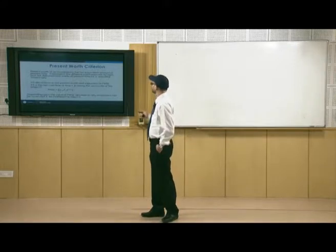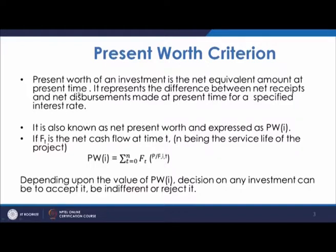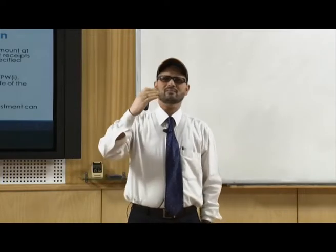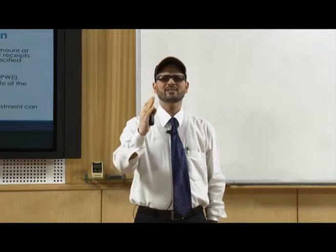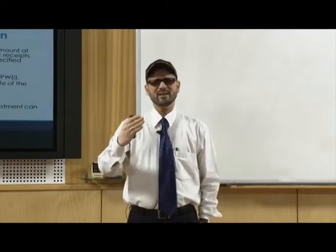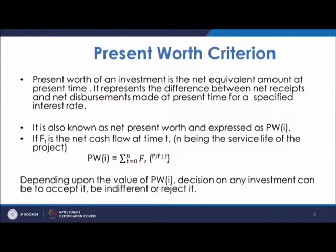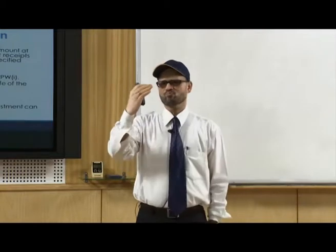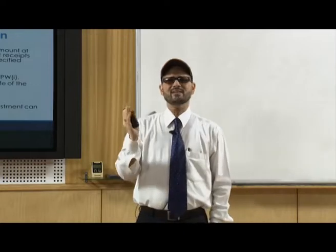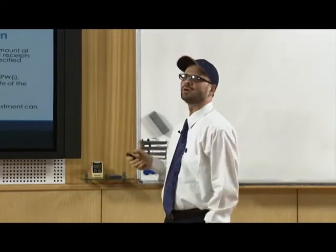Coming first to the present worth criterion: the present worth of an investment is the net equivalent amount at the present time. In any cash flow, you have receipts and disbursements occurring at different times. You find the net value of all receipts minus disbursements, evaluated at the present time. It represents the difference between net receipts and net disbursements made at present time for a specified interest rate.